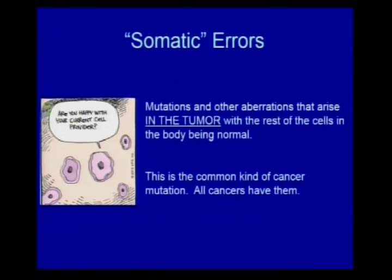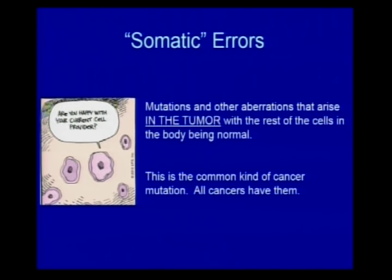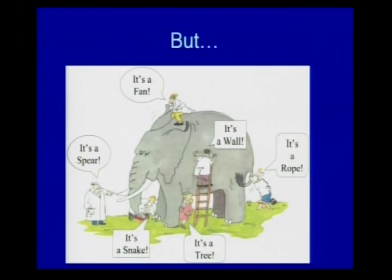Now let's talk about the genes in the cancer itself, which usually have little resemblance to the germline. These are mutations and other aberrations that arise in the tumor while the rest of the body's cells are normal for that particular gene. This is the more common kind, and all cancers have them.